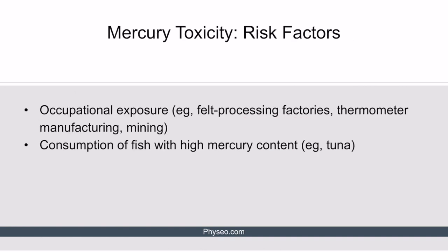The two most notable risk factors for mercury toxicity are occupational exposure, as seen in patients working in felt processing factories, thermometer manufacturing, or mining, and consumption of fish with high mercury content such as tuna. The latter risk factor is often tested in the setting of prenatal care, as all pregnant patients are counseled to avoid fish with high mercury levels due to its teratogenic effects.